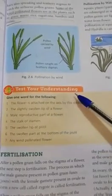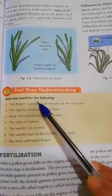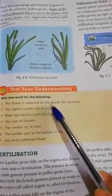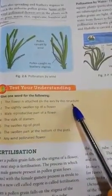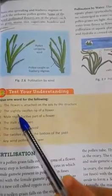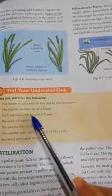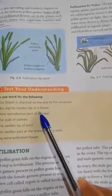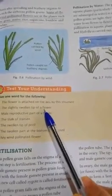Here is, test your understanding. Give one word for the following. The flower is attached on the axis by this structure. What we call that structure? Pedicel. The slightly swollen tip of a flower is known as receptacle. What is called? Receptacle.